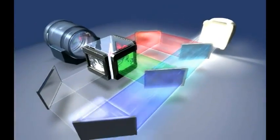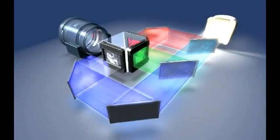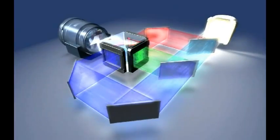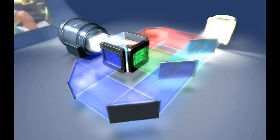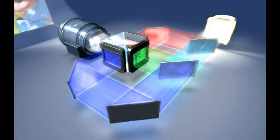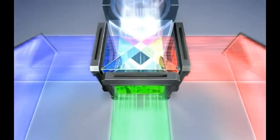For example, first, red light is reflected towards the red LCD. Green and blue light easily passes through this first dichroic mirror. The second dichroic mirror divides green and blue, completing the separation of three beams of light.